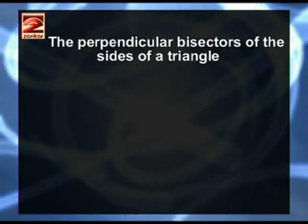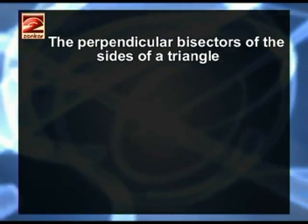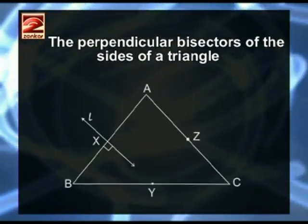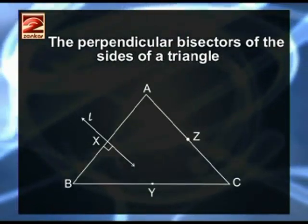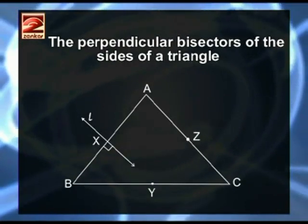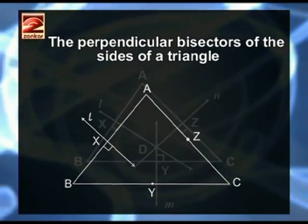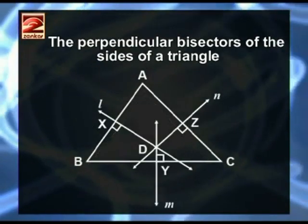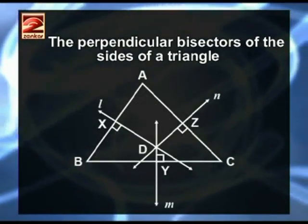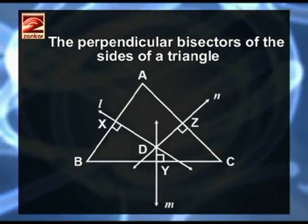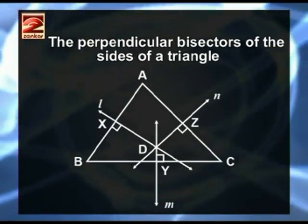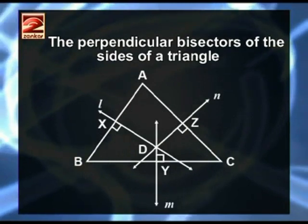Next property, the Perpendicular Bisectors of the Sides of a Triangle. A perpendicular line drawn through the midpoint of the side of a triangle is called the perpendicular bisector of that side. There are three perpendicular bisectors for the three sides of a triangle and the perpendicular bisectors of the three sides of a triangle are concurrent.